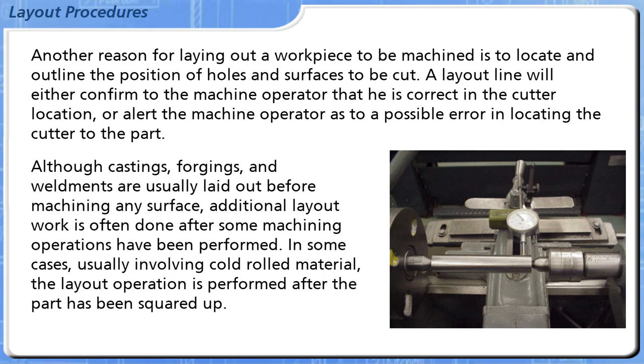Although castings, forgings, and weldments are usually laid out before machining any surface, additional layout work is often done after some machining operations have been performed. In some cases, usually involving cold rolled material, the layout operation is performed after the part has been squared up.